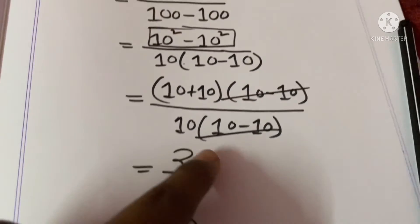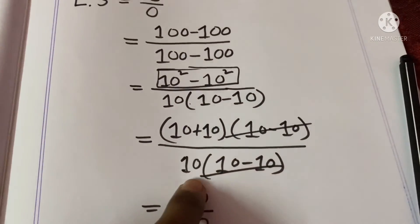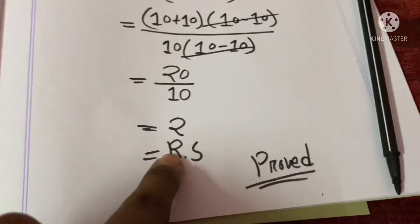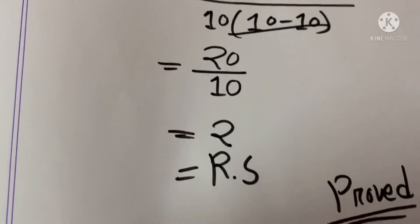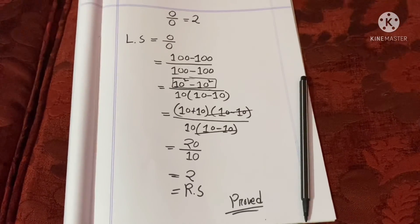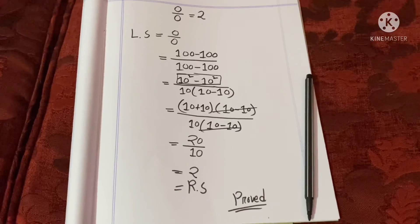Using the difference of squares formula, we get (10 plus 10) divided by 10, which equals 20 divided by 10, equals 2. L.S. equals R.S., so we can prove 0 divided by 0 is equal to 2. Bye bye!